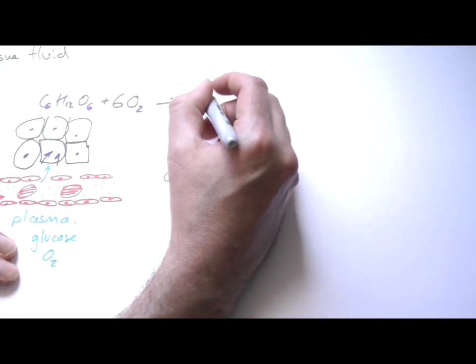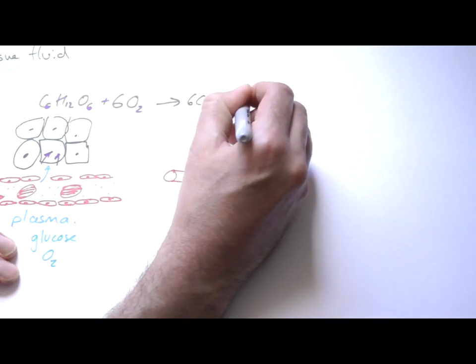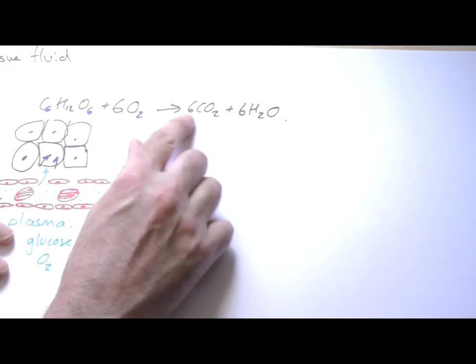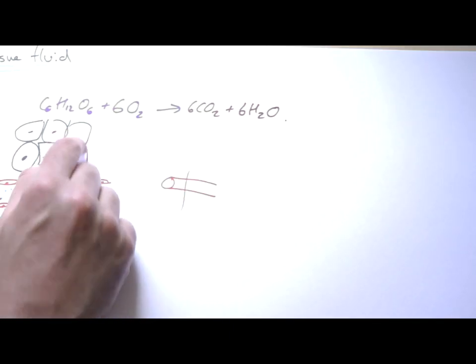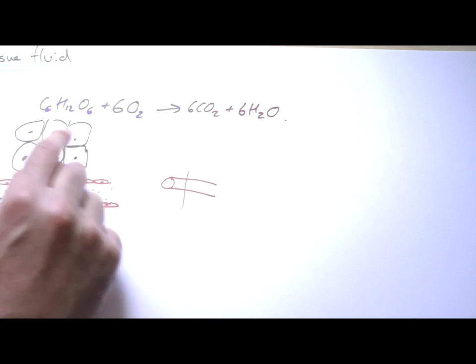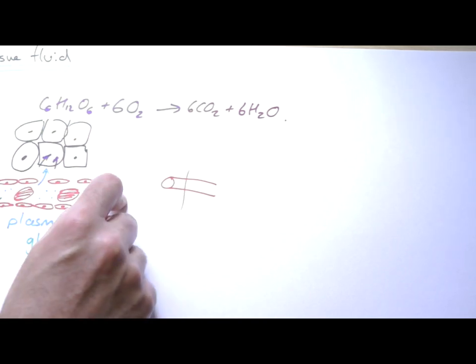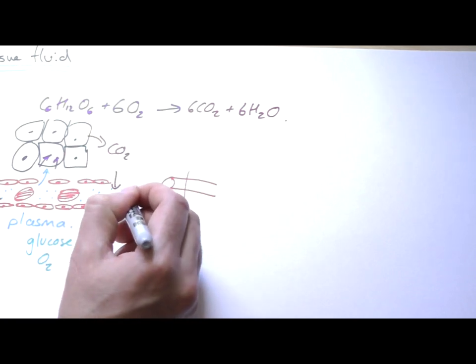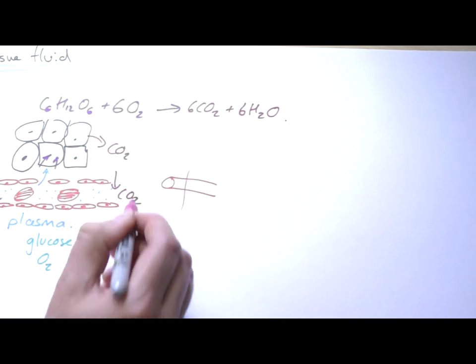The products from aerobic respiration are carbon dioxide and water. We'll ignore the water, but carbon dioxide is being produced in these cells. There is a higher concentration of carbon dioxide in these cells than in the tissue fluid around them, so carbon dioxide will tend to diffuse out and actually diffuse back into the capillaries.